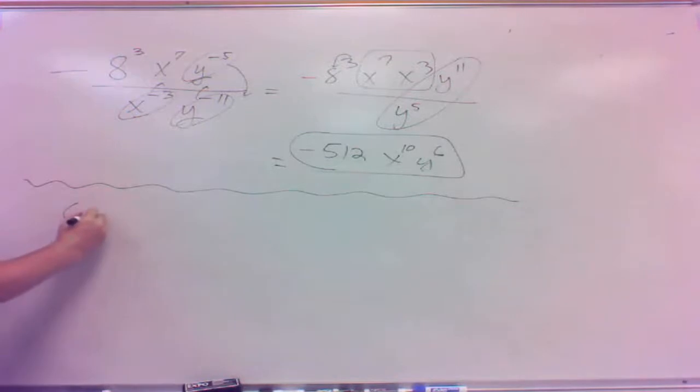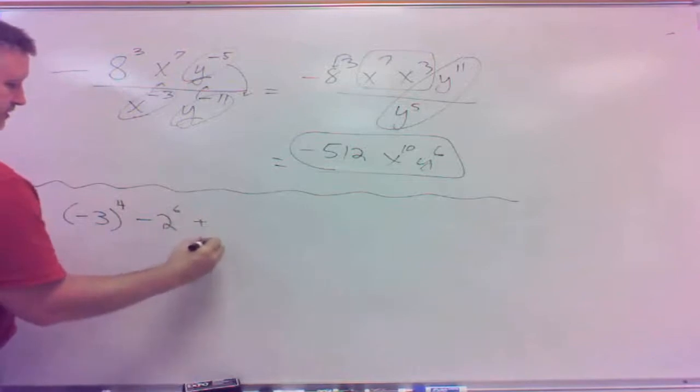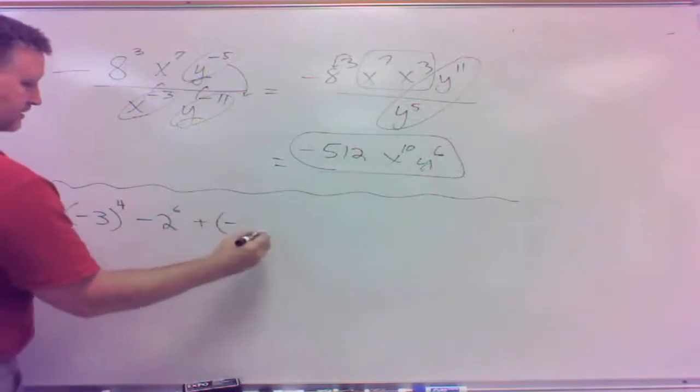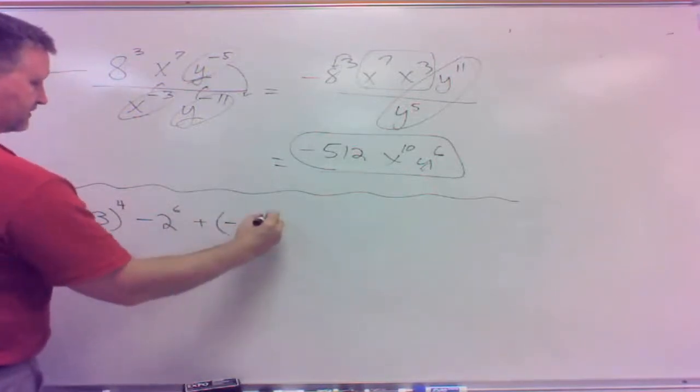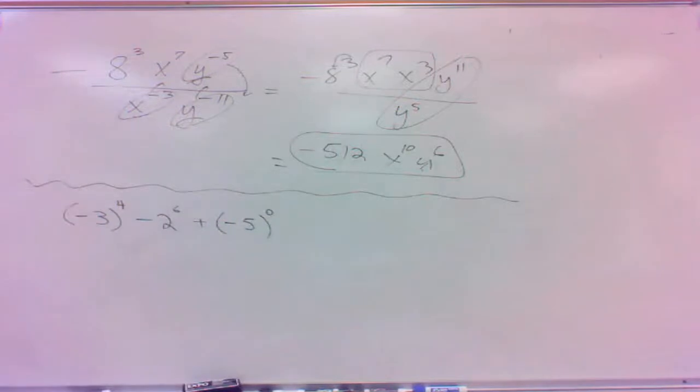How about this one? Negative 3 to the 4th minus 2 to the 6th plus negative 5 to the 0. Just to put several rules here all together at once. The first two here, I am raising to the 4th power negative 3, so that's negative 3 four times.